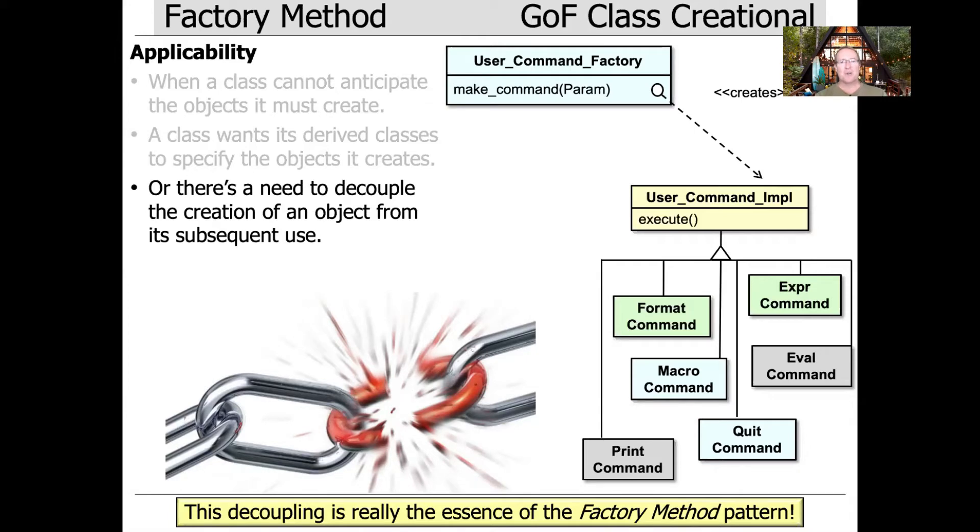I often use the metaphor that legislation is like sausage - you don't want to have to know how it's made. Well, that's often the case with objects. You like to use them, but you don't really want to know how they're created because creation can be messy. The use is very simple, but the creation is messy.